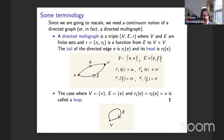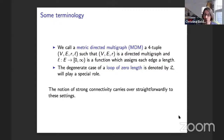The case where the vertex set is a singleton V, the edge set is also a singleton, and both the head and tail of the edge E are given by V — this is called a loop, and it's going to play a particular role in the rest of the talk. We add a function L from the edge set into the positive reals, which assigns each edge a length. The degenerate case of a loop of length zero, which I denote by script L, plays a special role.